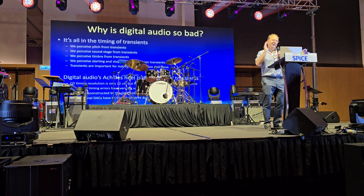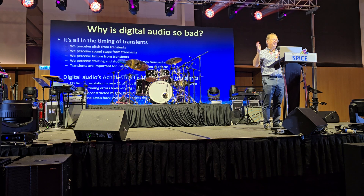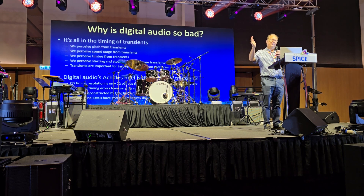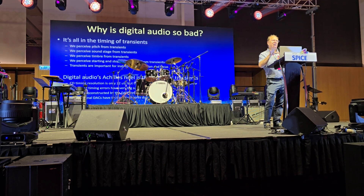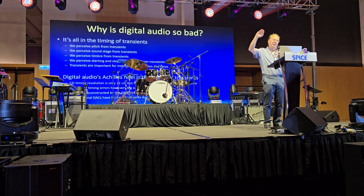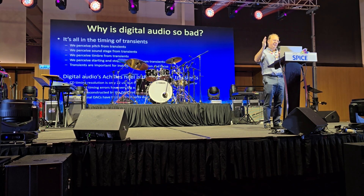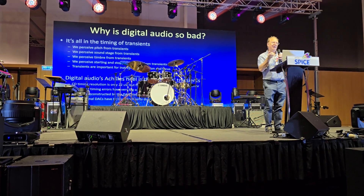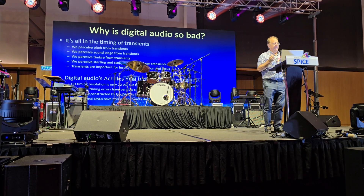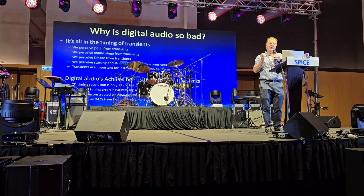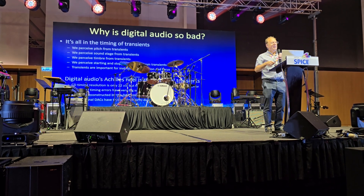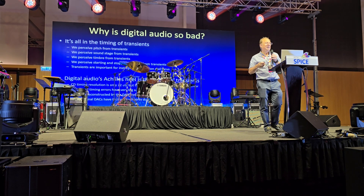Why is digital audio so bad? It's all down to the timing of transients. We perceive pitch, soundstage, timbre, and the starting and stopping of notes from transients. Transients are also important for instrument separation and focus. The trouble with digital audio is that it's sampled information. With CD, we have one sample, then 22 microseconds later another sample. The DAC has to recover the timing information — reconstruct the original waveform from one sample to the next. Conventional DACs are very poor at this, making the sound muddled and causing listening fatigue.